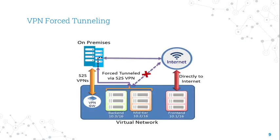VPN Force Tunneling lets you redirect or force internet-bound traffic back to your on-premises location via a site-to-site VPN tunnel for inspection and auditing. This is a critical security requirement for most enterprise IT policies. Without force tunneling, internet-bound traffic from your VMs in Azure always travels from the Azure network infrastructure directly to the internet, without the option to inspect all outbound traffic. Unauthorized internet access potentially leads to information disclosure or other types of security threats.